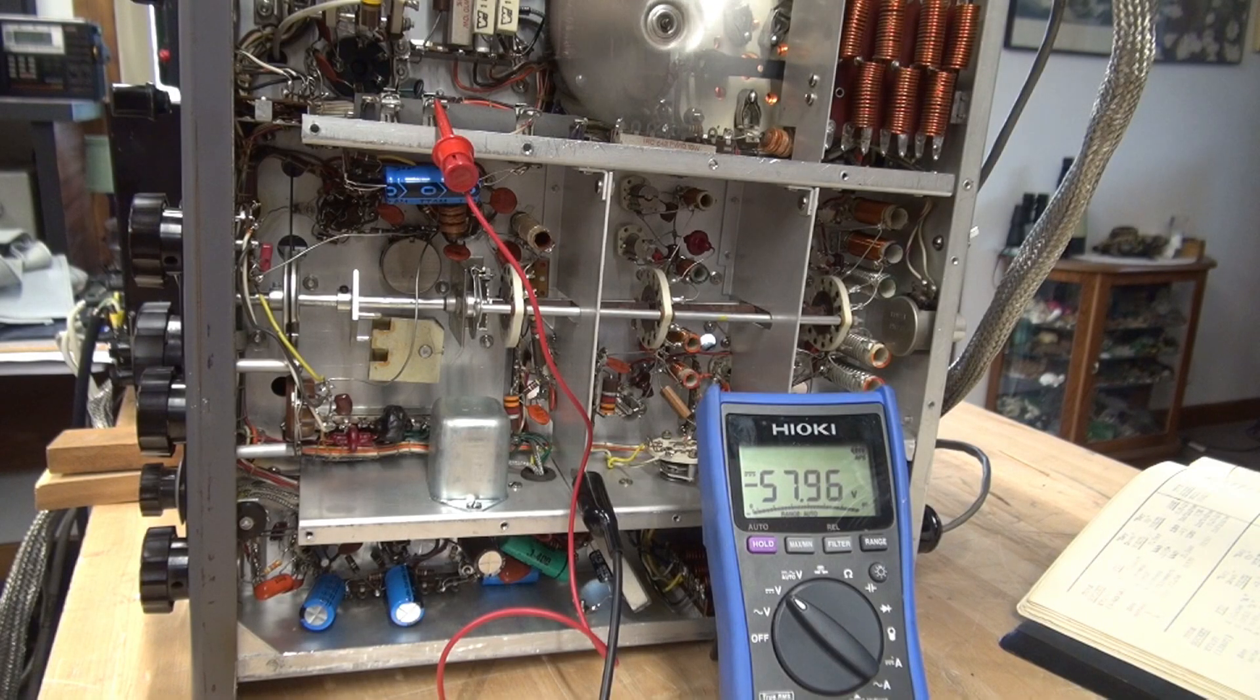So I'm monitoring on the tapped bias resistor, and they're specifying approximately negative 45 volts on that tap. That tap actually feeds pin 7 of the 12AU7 through a 22K resistor. So somewhere between that tap and that resistor, we're losing 30 volts.